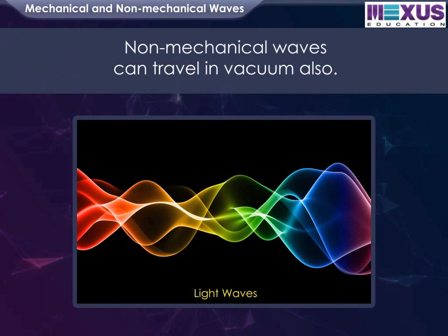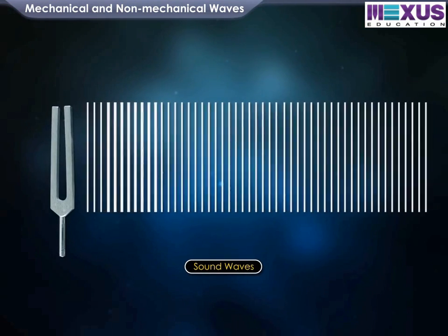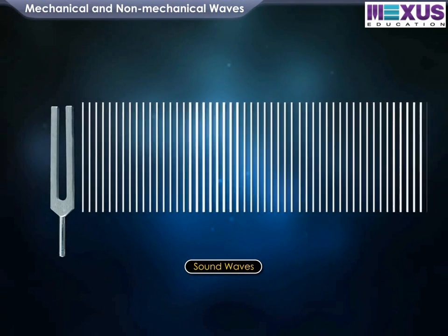Non-mechanical waves can travel in vacuum. Mechanical waves take place due to periodic motion of the particles in the medium about their mean position. Sound waves and waves on the surface of water are examples of mechanical waves.